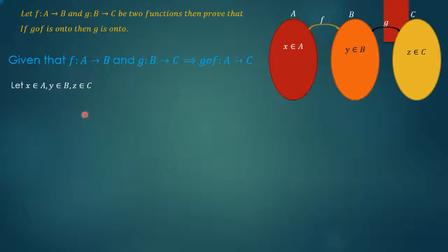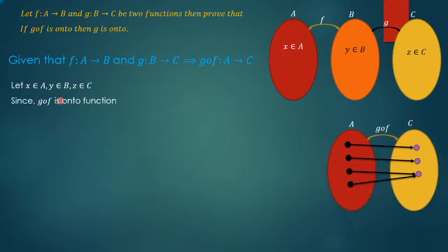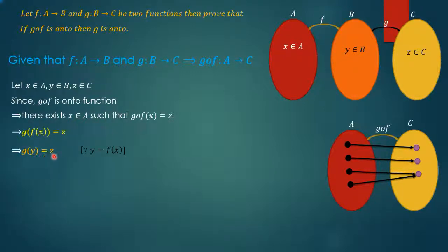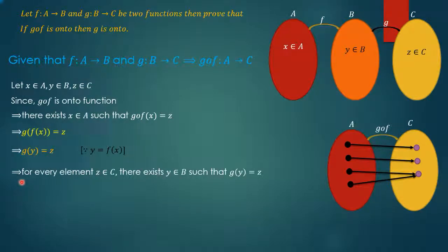Let x, y, and z be elements of A, B, and C respectively. Since g∘f is an onto function, we have g(f(x)) = z. We can write this as g(y) = z, since y = f(x). This implies that for every element z belonging to C, there exists y belonging to B such that g(y) = z, and this implies g is an onto function.